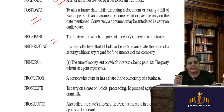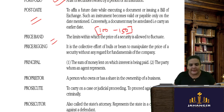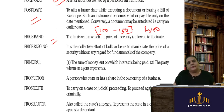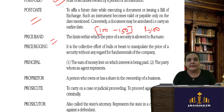A price band is the limit within which the price of securities can fluctuate — for example, a price band of Rs. 100 to Rs. 150 means you bid only within that range. Nowadays, companies coming with a public issue don't give a fixed price; instead they give a price band and ask you to bid, then close at the highest bid, which also tells the company its market value.